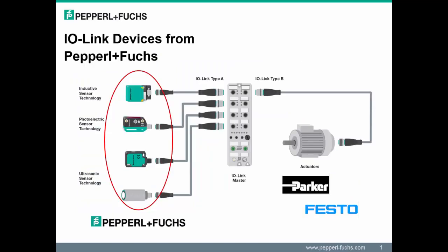Pepperl+Fuchs offers a wide range of intelligent sensors with an IO-Link interface. These range from photoelectric light barriers, light grids, and distance sensors, to ultrasonic sensors and inductive position measurement systems. All of these devices combine the advantages of IO-Link reviewed in Session 1, and more importantly, increase the efficiency of your plant processes.